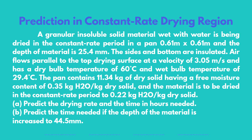Prediction in Constant Rate Drying Region. A granular, insoluble solid material wet with water is being dried in the constant rate period in a square pan of side 0.61 meters and the depth of material is 25.4 millimeters. The sides and bottom are insulated. Air flows parallel to the top drying surface at a velocity of 3.05 meters per second and has a dry bulb temperature of 60 degrees Celsius and wet bulb temperature of 29.4 degrees Celsius.